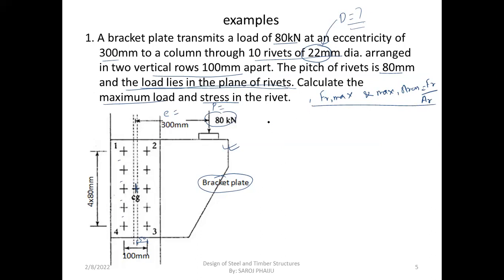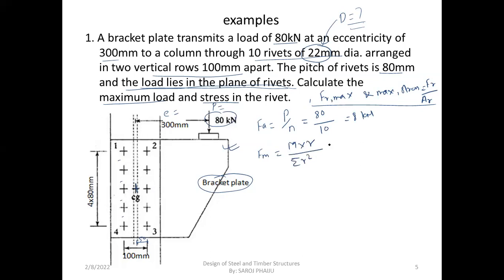Now we are going to talk about FA — force on any rivet due to axial load — which equals total load divided by total number of rivets. This is the value in kN. With the torsional force due to bending moment, the formula is M multiplied by R divided by summation of R squared.